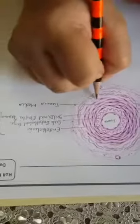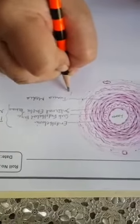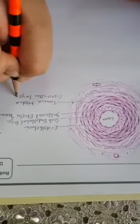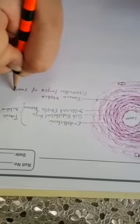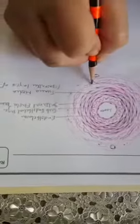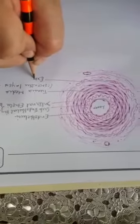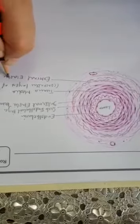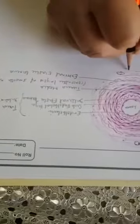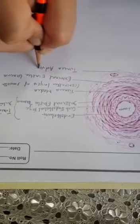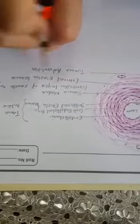Then this is external elastic lamina, and this is tunica adventitia. This is a diagram of muscular artery.